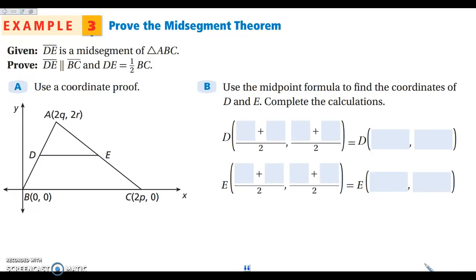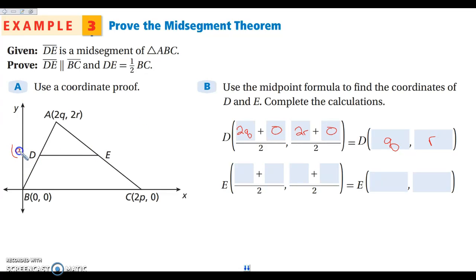In example 3, we are actually proving the mid-segment theorem using a coordinate proof, to show that a mid-segment is parallel to its opposite side and half the length. We start by plotting the triangle in a coordinate plane with variables as coordinates, then finding the coordinates of the midpoints. For point D, using the midpoint formula: (2Q + 0)/2 and (2R + 0)/2, which gives coordinates (Q, R).